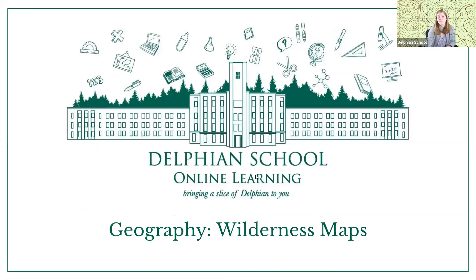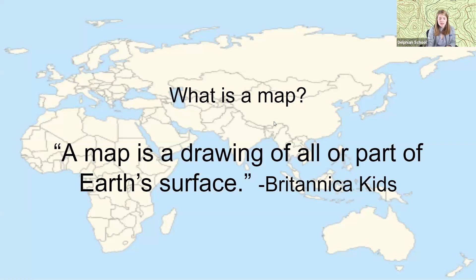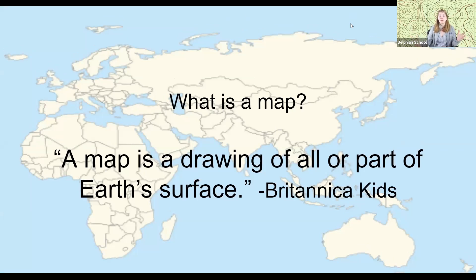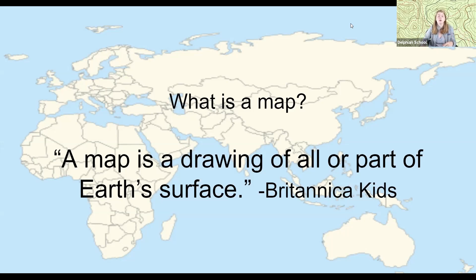We're going to be talking about wilderness maps today. First thing to talk about is: what is a map? A map is a drawing of all or part of the earth's surface. You've probably seen maps of the whole world, and maybe you've seen a globe, which is a kind of map that's on a sphere so you can move it around and see all the different parts exactly as they are in the real earth.